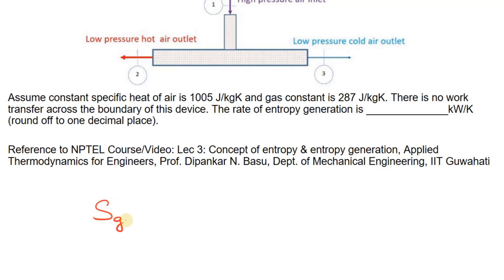The generated entropy we can write as S_e minus S_i, where S_i is entropy at the inlet and S_e is entropy at the exit, and S_gen represents generated entropy.